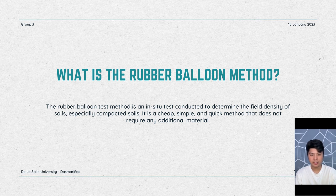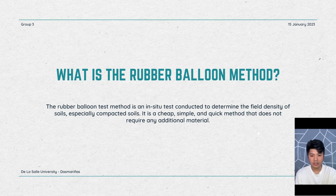Soil has different densities in general. Field density is the average density of a sample and is often used in geotechnical engineering to find out how much load a certain volume of soil can support without overloading it. A high field density means that there are more compact particles like sand and gravel, whereas low field density means that there are more porous particles like silt or clay.